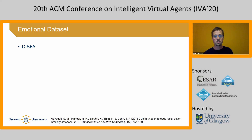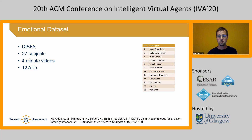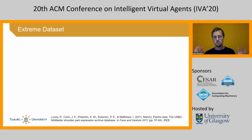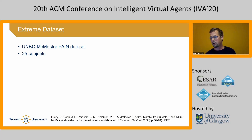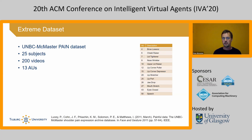We also used an emotional dataset called DISFA, where 27 subjects were filmed while watching a four-minute video with emotion elicitation clips. Those videos were encoded for 12 different action units. Finally, we looked at an extreme dataset — the UNBC-McMaster Pain dataset — where 25 subjects were filmed moving their painful shoulder, resulting in 200 videos encoded for 13 different action units. The last two datasets were encoded for the full spectrum from 0 to 5.